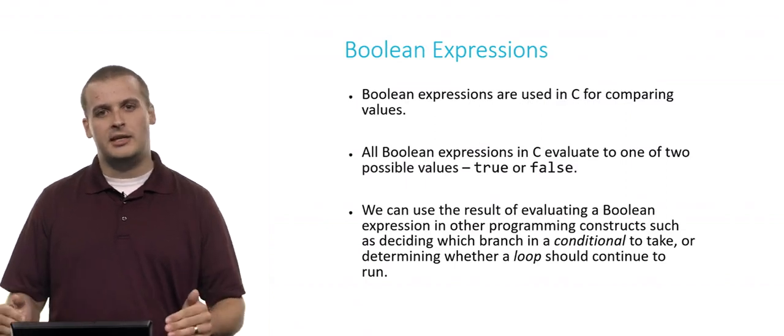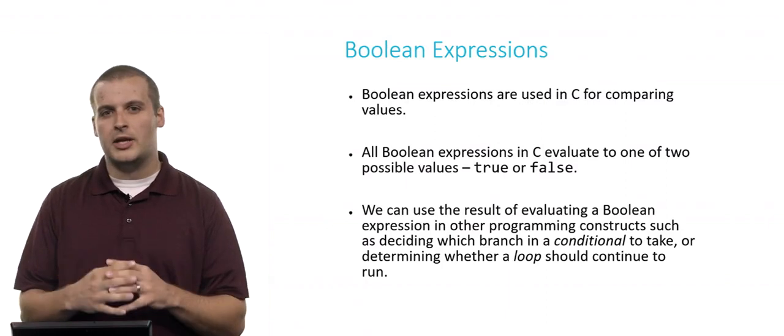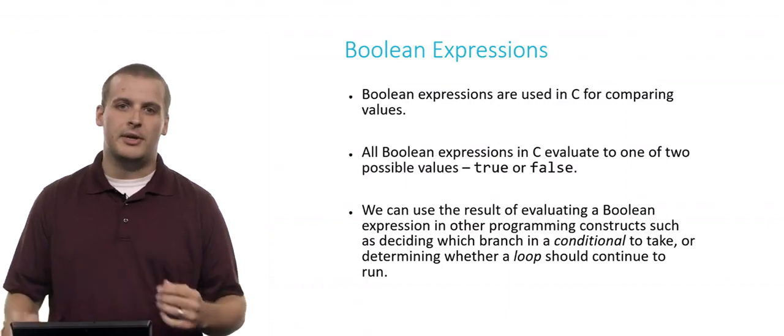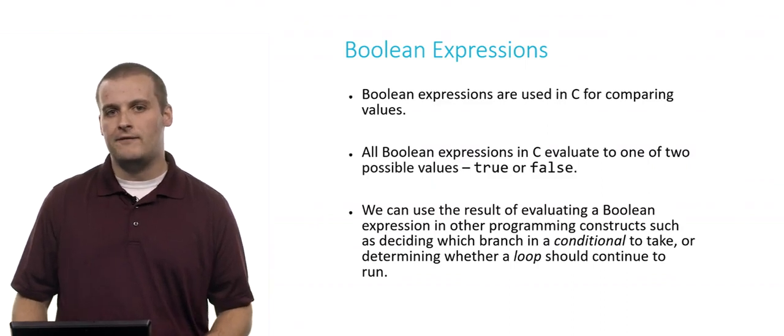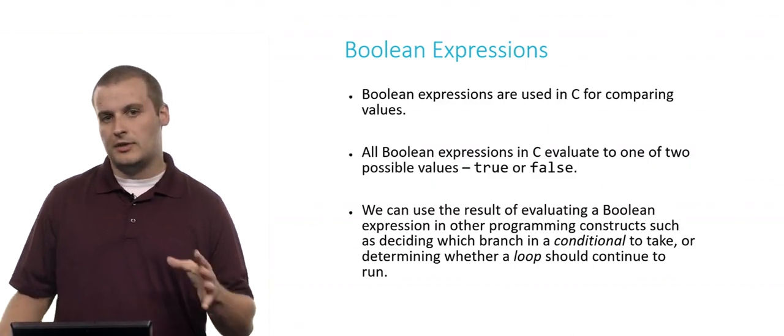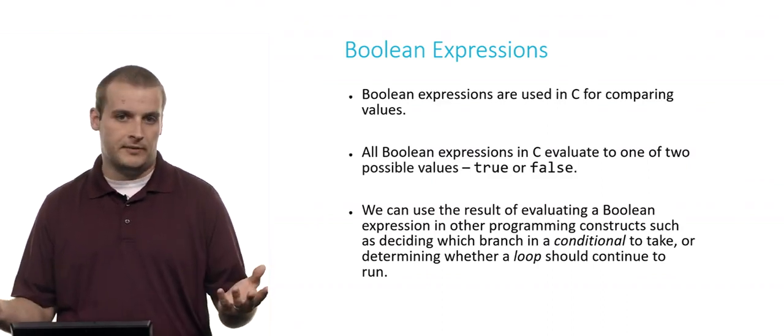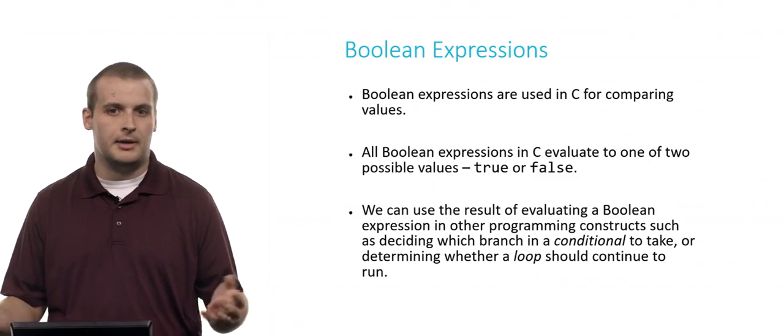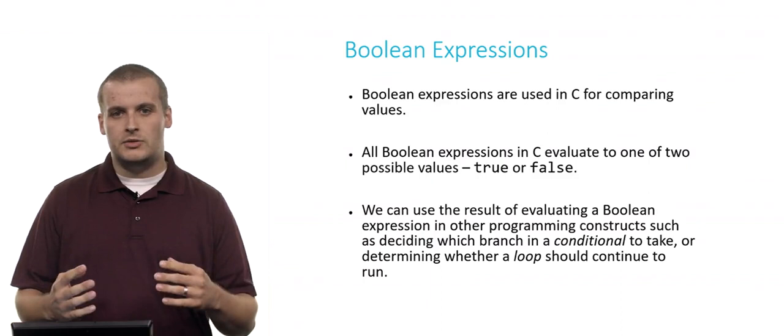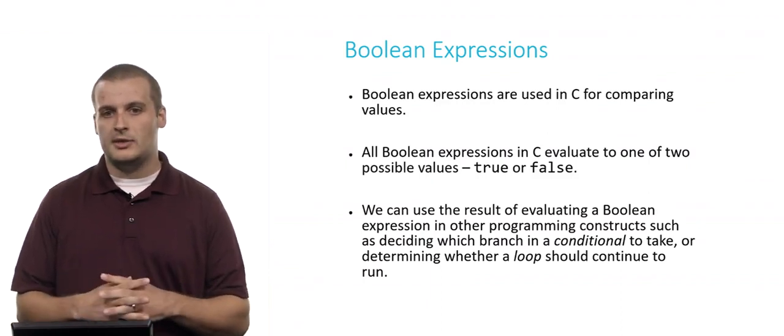So let's switch gears for a second and talk about Boolean expressions, which also fall into the overall category of operators. But Boolean expressions, unlike arithmetic operators, are used for comparing values. So again, all Boolean expressions in C evaluate to one of two possible values. Recall, true or false. That's the only two values that a Boolean variable can take on.